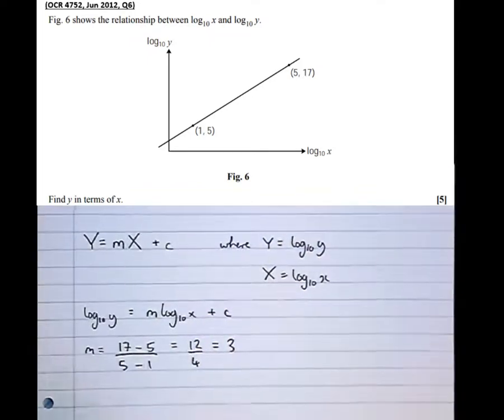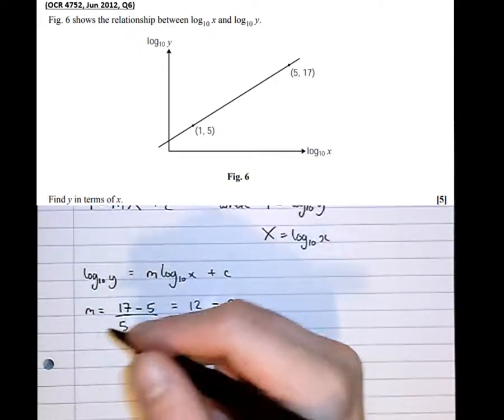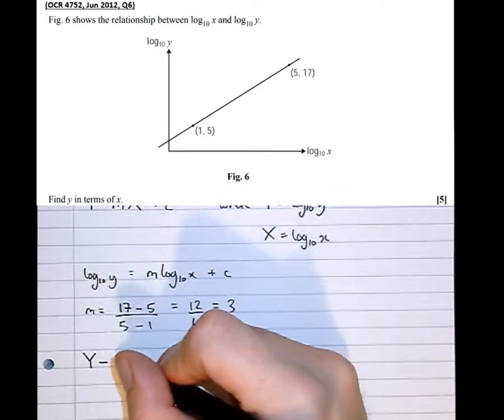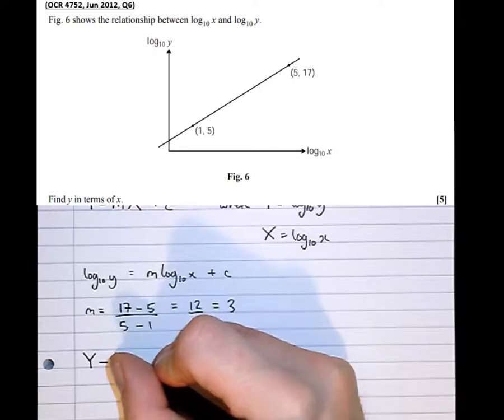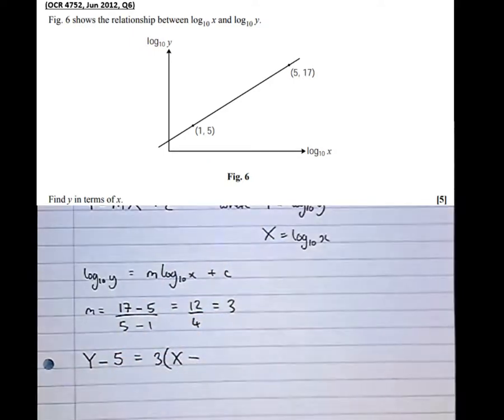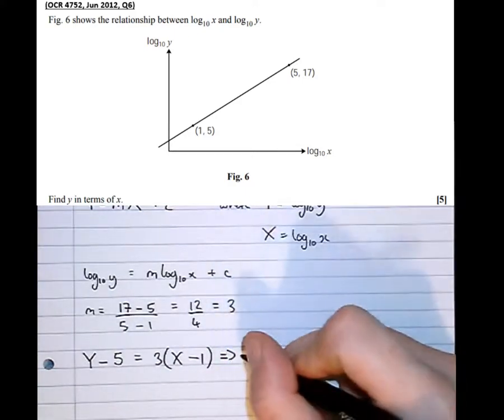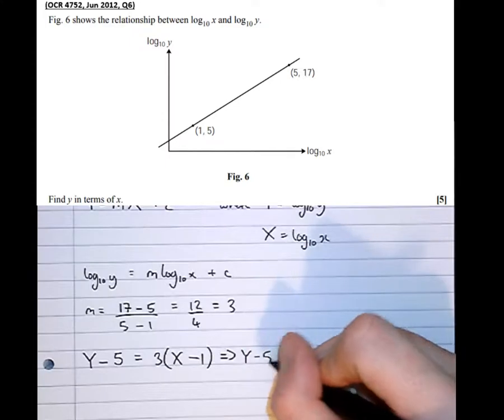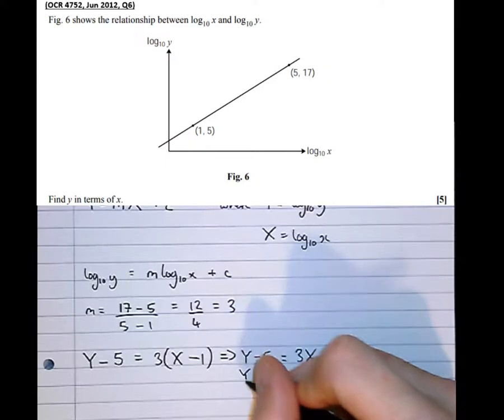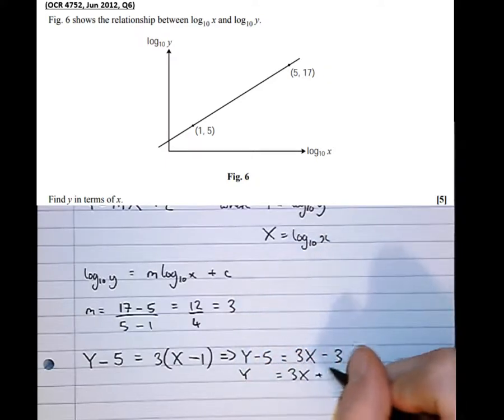We can then find the equation of the curve using y minus y1 equals m times x minus x1. So y minus 5 equals 3 times x minus 1, which means that y minus 5 equals 3x minus 3, which means that y equals 3x plus 2.